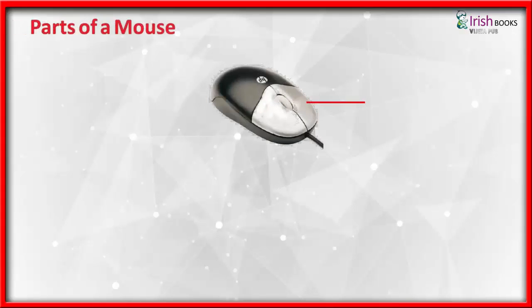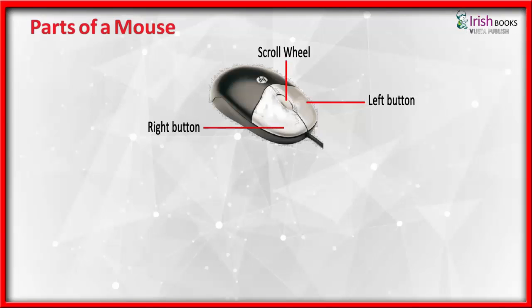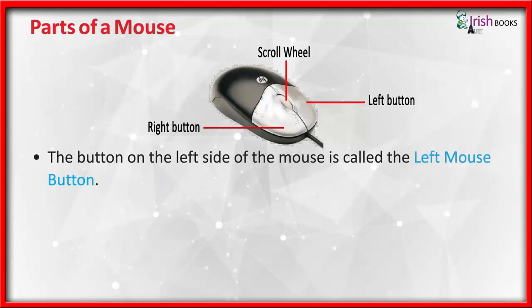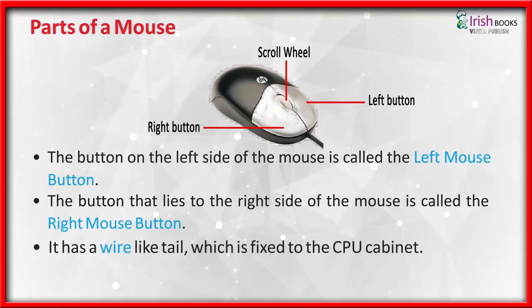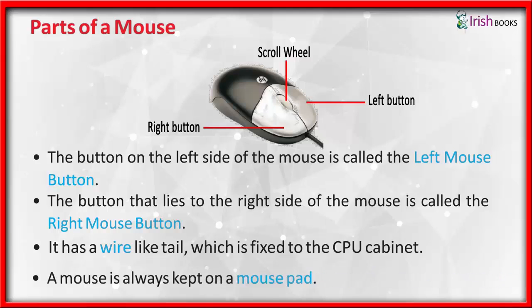Parts of a mouse: Left button, Scroll wheel, Right button. The button on the left side of the mouse is called the left mouse button. The button on the right side is called the right mouse button. It has a wire like a tail which is fixed to the CPU cabinet. A mouse is always kept on a mouse pad.